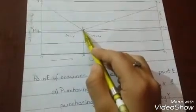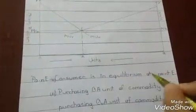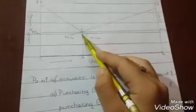So here is the diagrammatic illustration. Point E is the point of equilibrium. Here consumer is in equilibrium at point E after purchasing OA units of commodity X and AO1 units of commodity Y. Here consumer equilibrium strikes at point E.